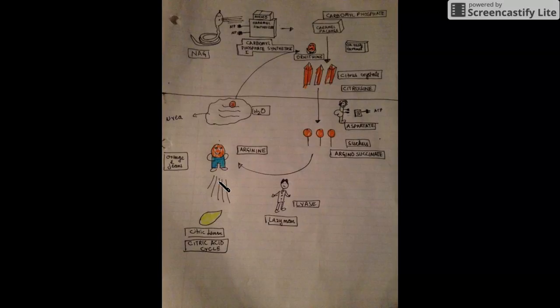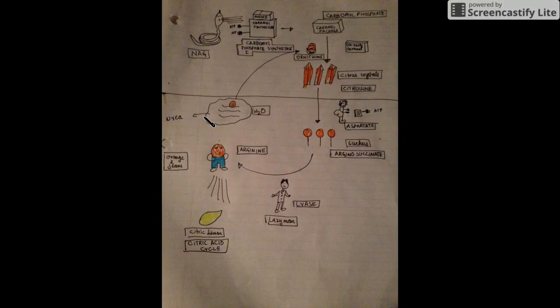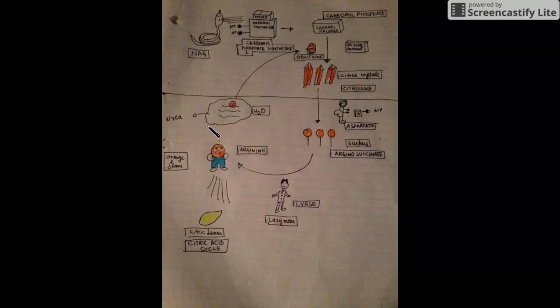Now this arginine along with water is again converted into ornithine that enters into the mitochondria and is utilized in formation of citrulline. And in this process urea is formed, right? And that is excreted out in the blood and then excreted in the kidney, that goes into the kidney and excreted out from there.